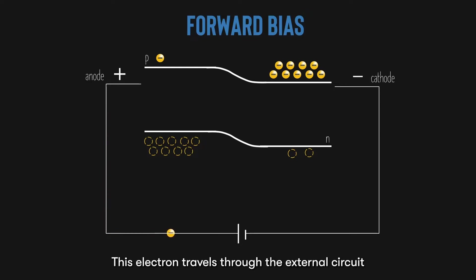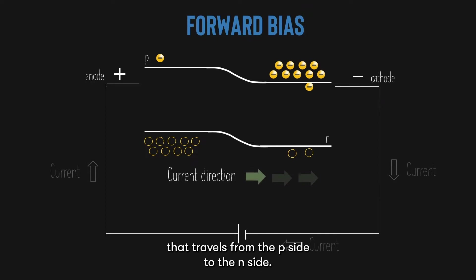This electron travels through the external circuit and eventually comes to the N side. Since there is one less electron at the N side due to the diffusion earlier, the electron will then re-enter into the conduction band. The cycle repeats, producing a current flow that travels from the P side to the N side.